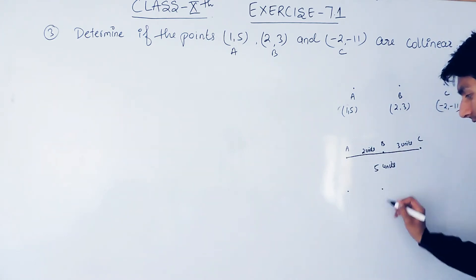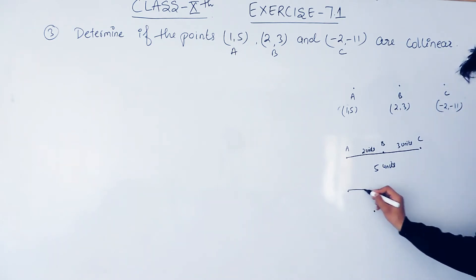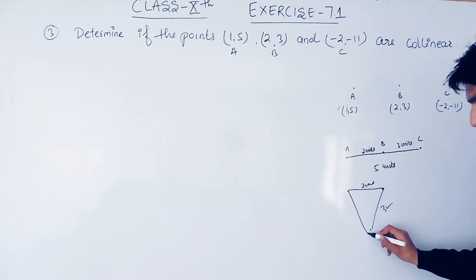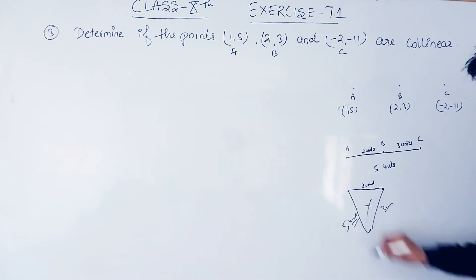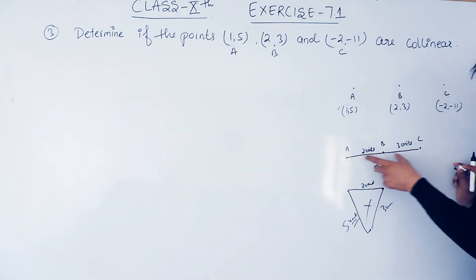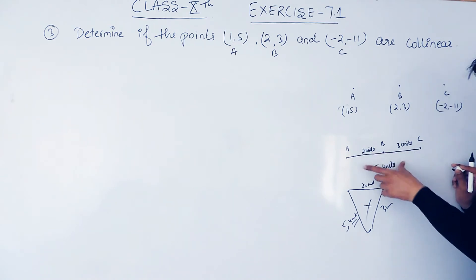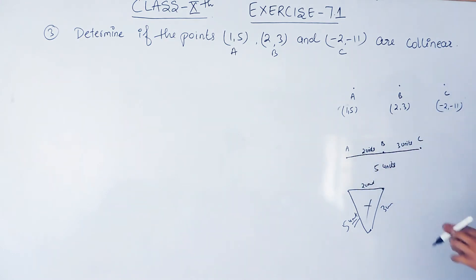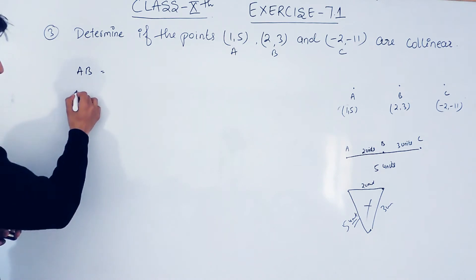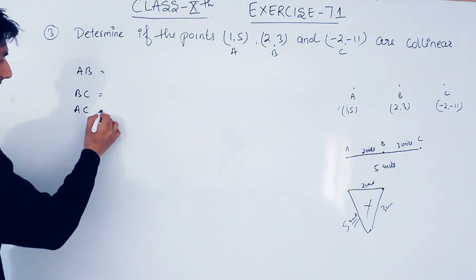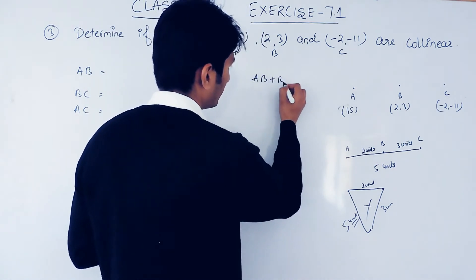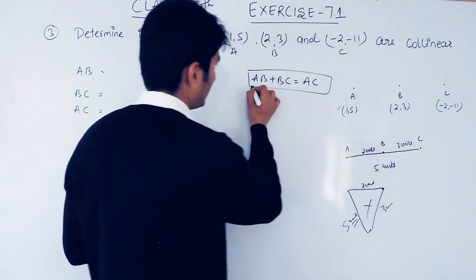If these three points are collinear, the distance between individual points should equal the sum of any two endpoint distances. So you have to find the distance AB, then the distance BC, and the distance AC, and after that prove that AB plus BC equals AC.